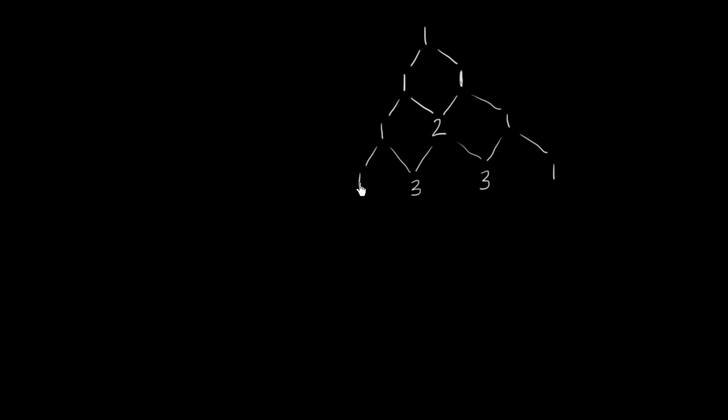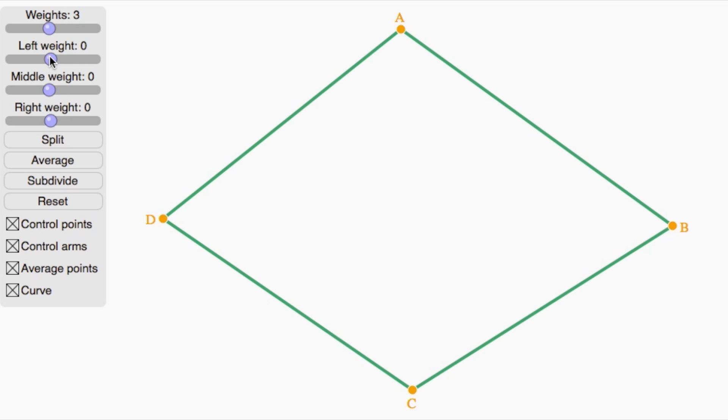Let's see what happens if I pick weights that aren't from Pascal's Triangle. I don't even have to pick positive weights. So suppose I pick 1, negative 2, 3.